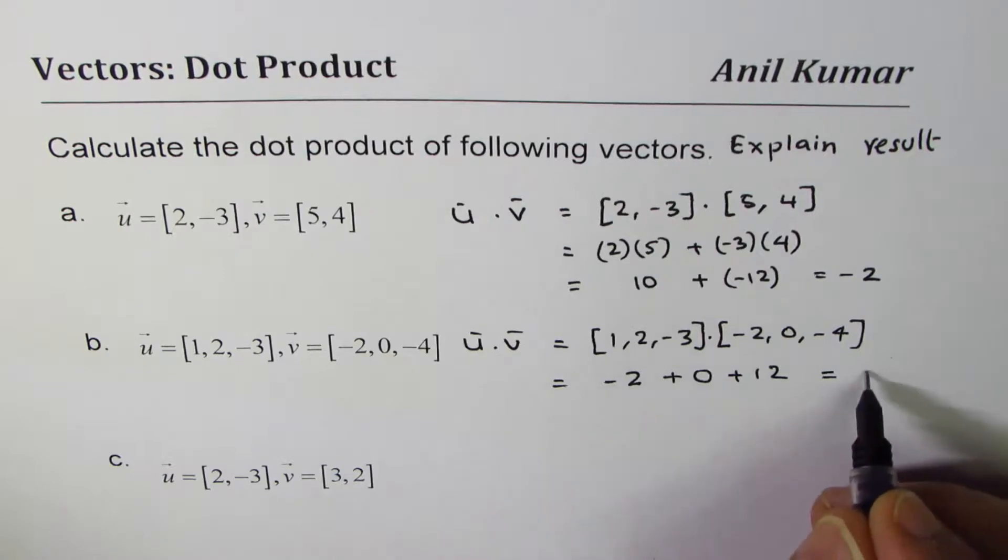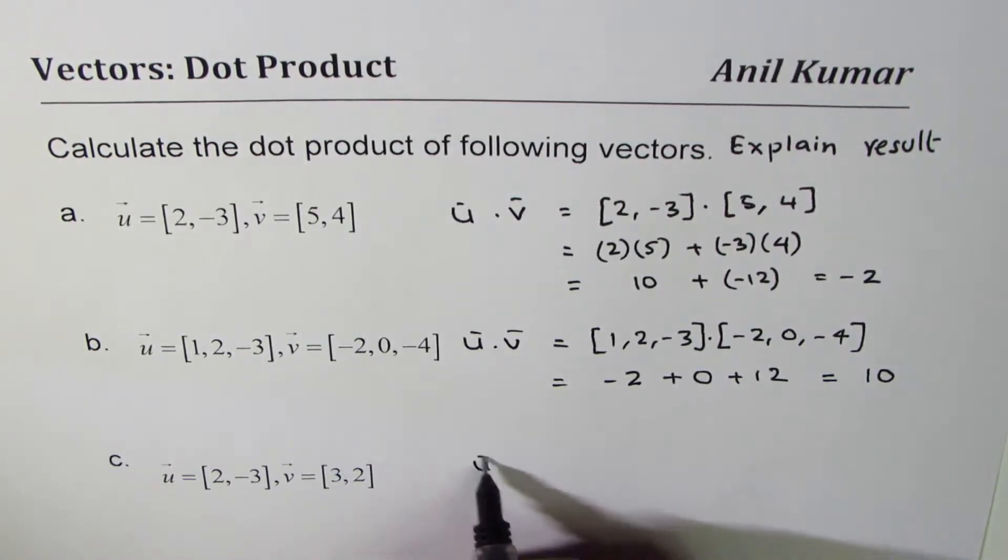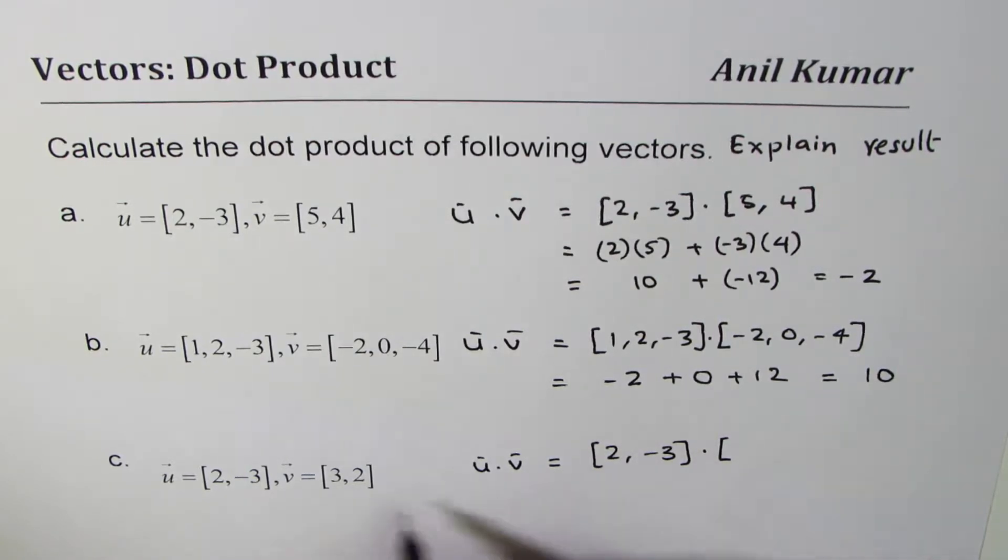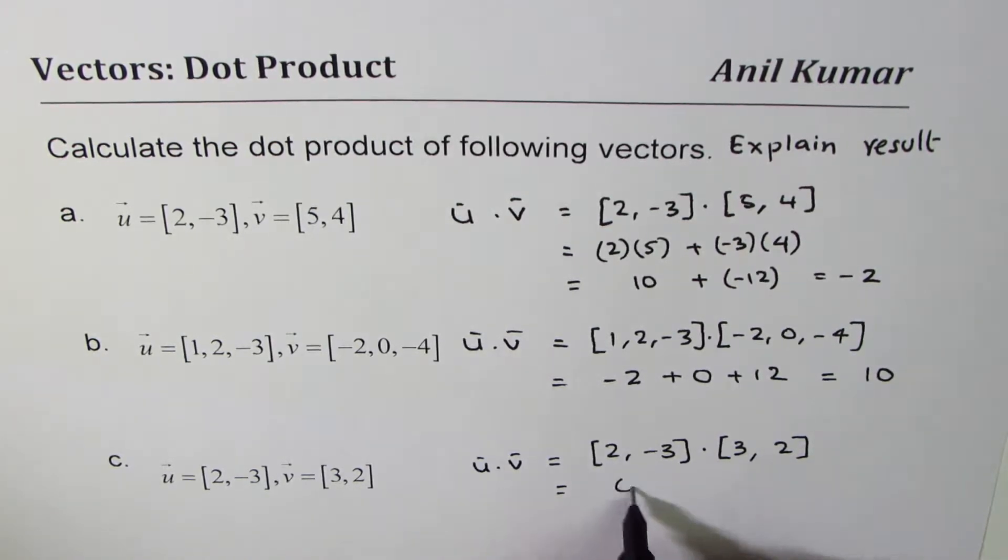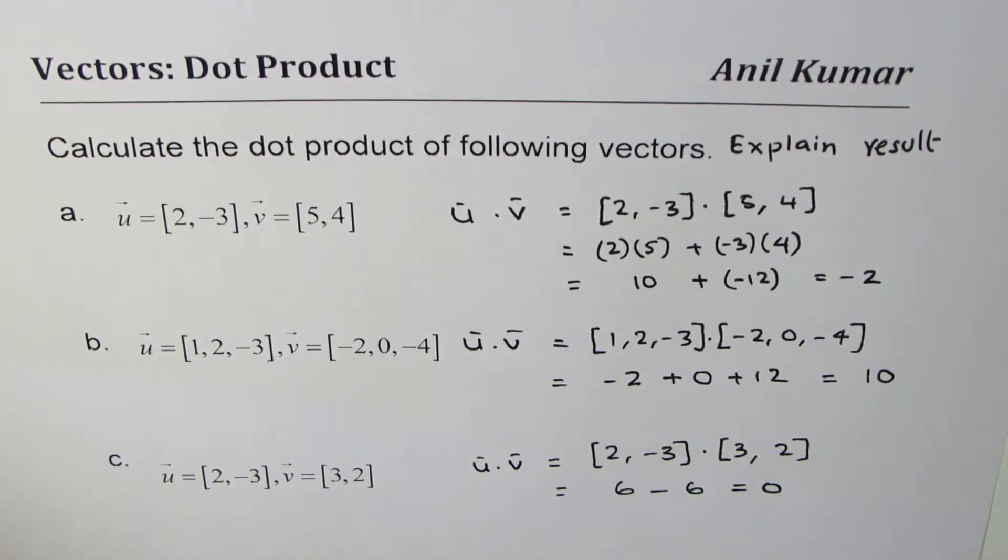When you add them up, what you get: 12 minus 2 is 10. The next one here is u dot v is product of [2, -3] and [3, -2]. What do you expect here? I think you expect 0. These two vectors seem to be perpendicular vectors. Let's see.